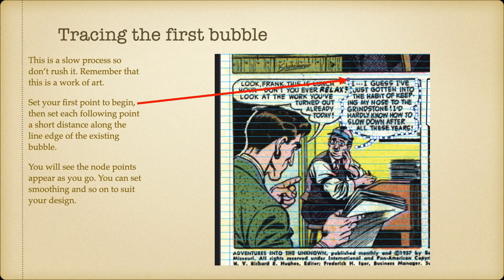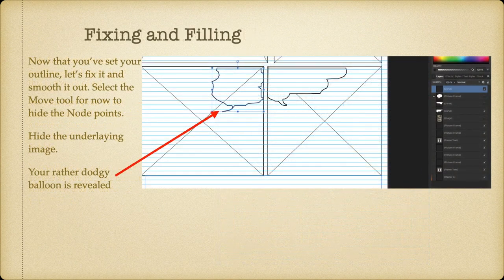The smoothing option is up the top and you'll see that in a moment. What it does is round out the curves so you remove all the jaggies. Now that you've set your outline initially, let's fix it and smooth it out. Select the move tool — that hides the node points and everything on the screen disappears. Then go over and hide the underlying image because it's too much of a distraction.